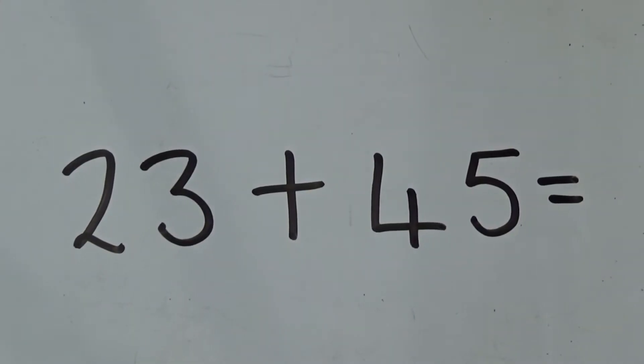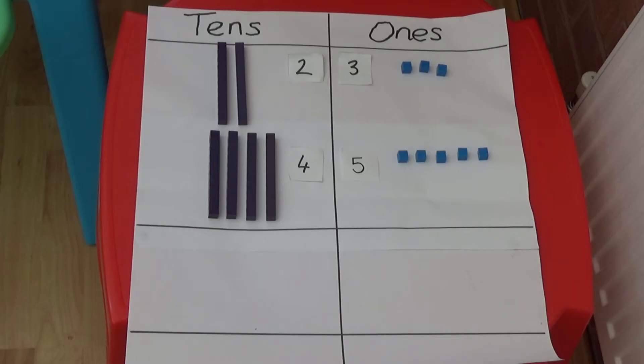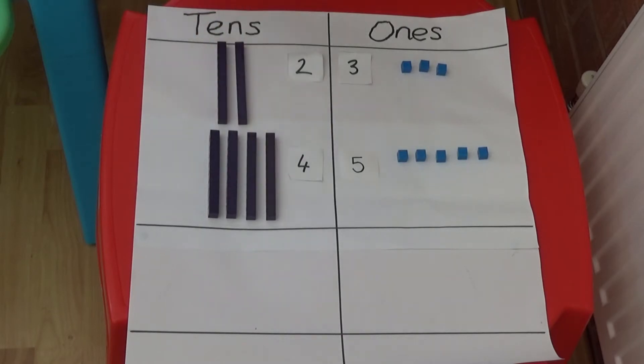First I'm going to show you how to add 23 and 45. I've made the number 23 using two tens rods and three ones cubes. And underneath I've made 45 using four tens rods and five ones cubes.